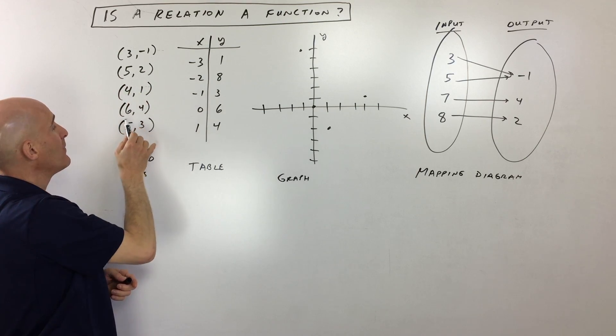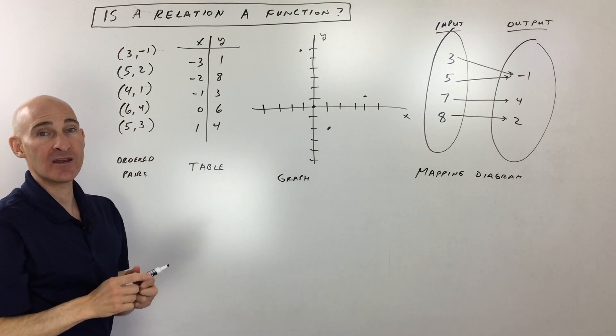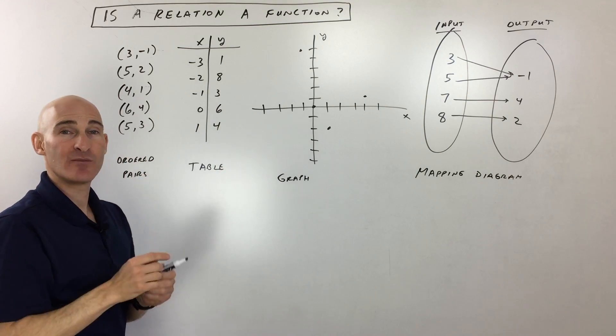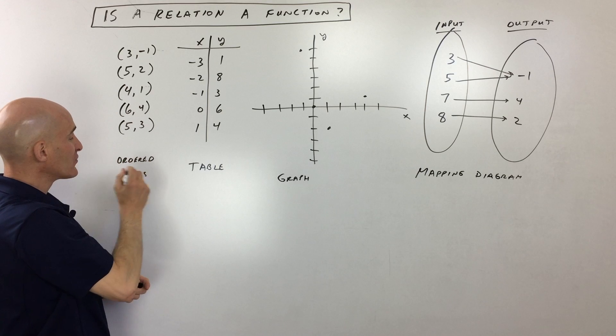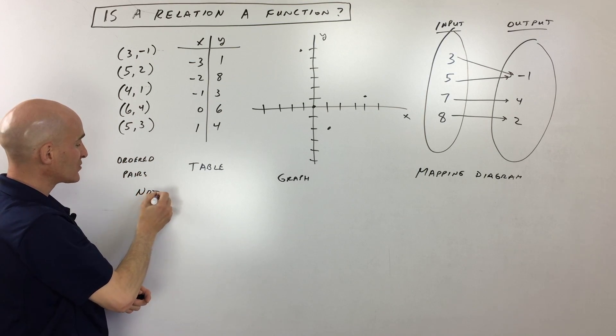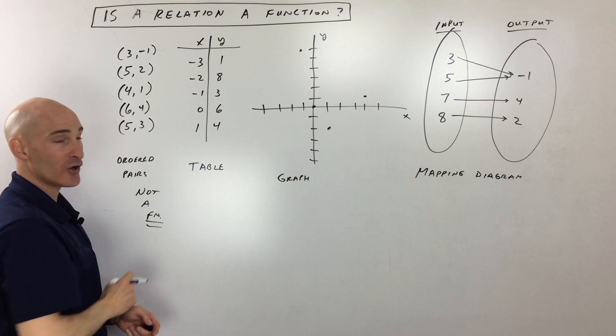And that's what's happening here. You can see five is mapping to two, but five is also mapping to three. Back to that vending diagram, we're pressing the button five. One time we get two as an output, one time we get three. So this one is not a function.